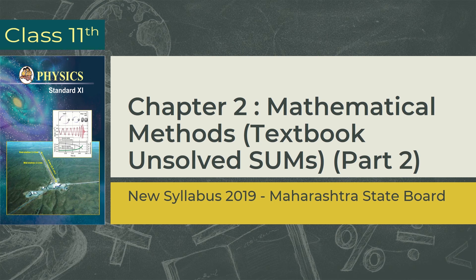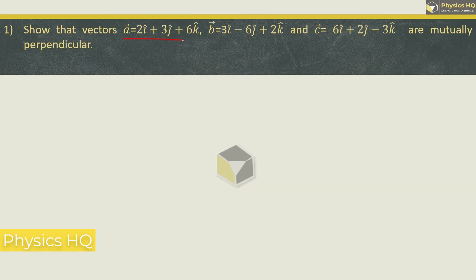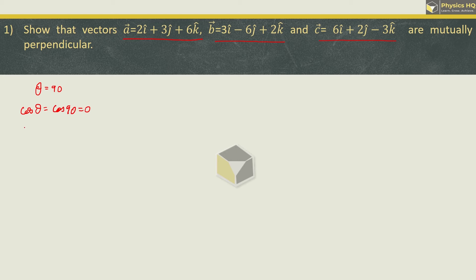Let us continue with the first sum for today. Show that vectors a equal to 2i plus 3j plus 6k, b equal to 3i minus 6j plus 2k, and c equal to 6i plus 2j minus 3k are mutually perpendicular. To prove mutually perpendicular, we need to prove the angle between them is 90 degrees. So cos theta will be cos 90 which equals 0. We will be using the formula for dot product, where dot product of a and b equals magnitude of a times b times cos theta. So if the angle between them is 90, the dot product is 0. Let us check for vectors a and b.